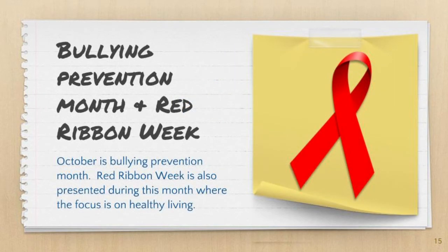The last way, as a district, we address bullying is in the month of October. October is Bullying Prevention Month but also Red Ribbon Week. Throughout this week and the month, we focus on healthy living and relationships and how healthy choices are not just about being drug and alcohol free but also being respectful to all.